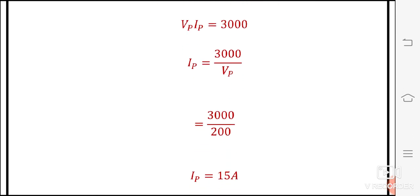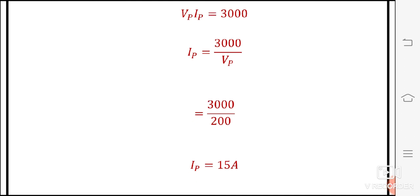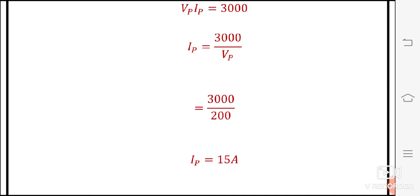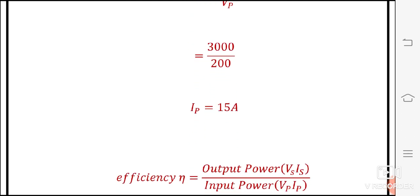So 3000 divided by 200 is equal to 15 amperes. Therefore the primary current IP is equal to 15 amperes.